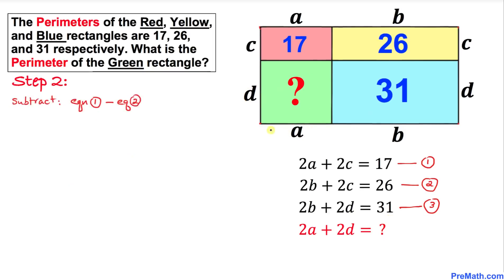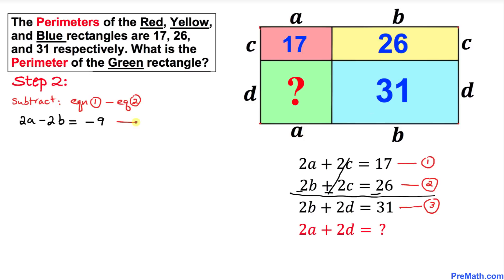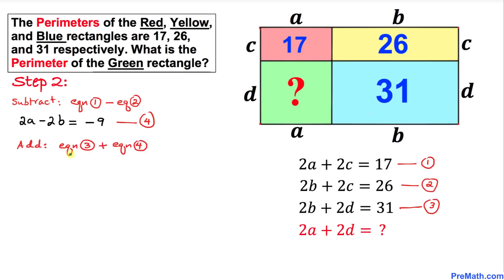Here's our next step: we are going to subtract equation one minus equation two. We put a minus sign and we can see that 2c and negative 2c cancel out, so we get simply 2a minus 2b equals negative 9. I'm going to call this equation number four.